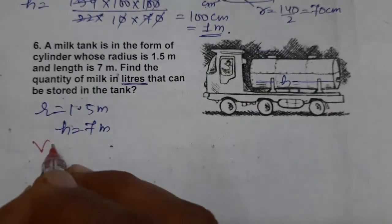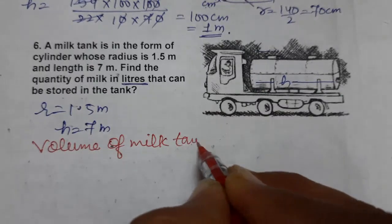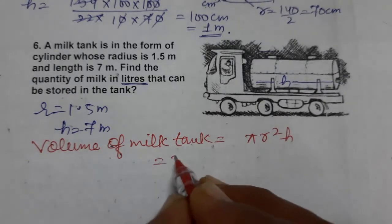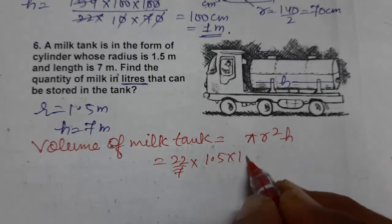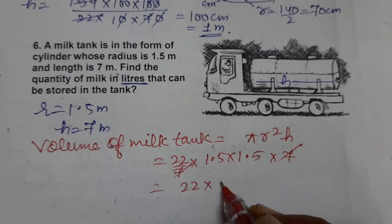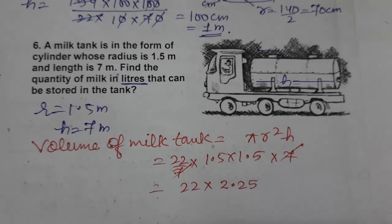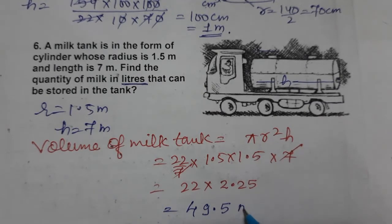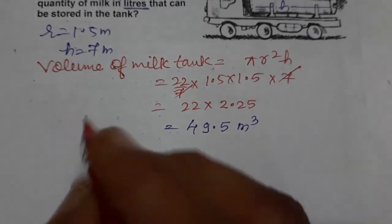First, find the volume of the milk tank. Volume of cylinder = πr²h = 22/7 × 1.5 × 1.5 × 7. The 7 in numerator and denominator cancel, giving 22 × 1.5 × 1.5 = 22 × 2.25 = 49.5 meter cube.